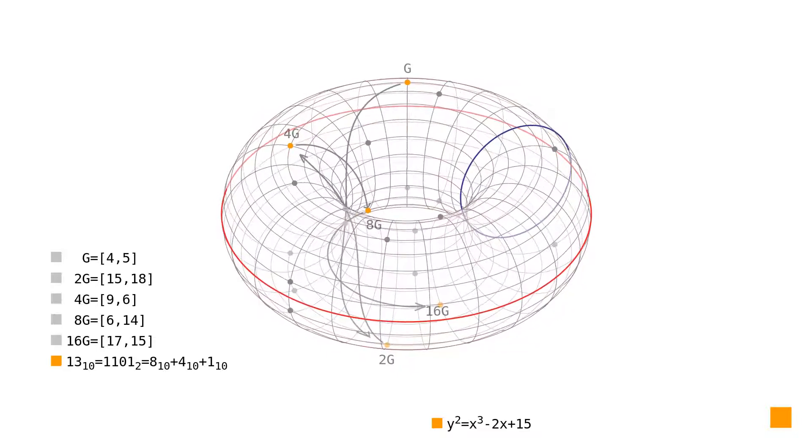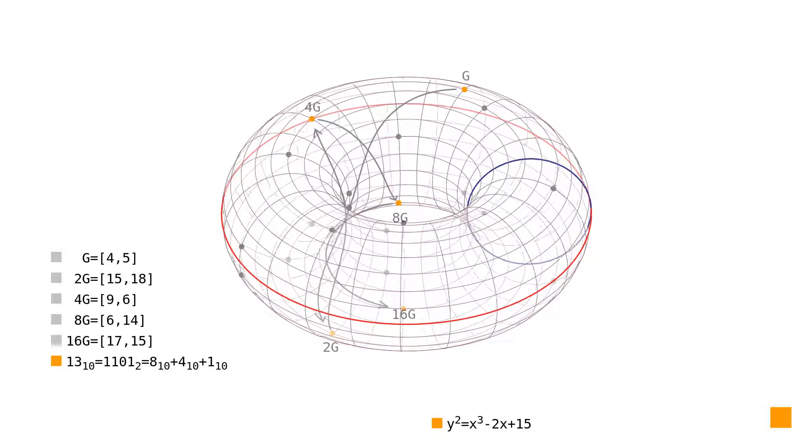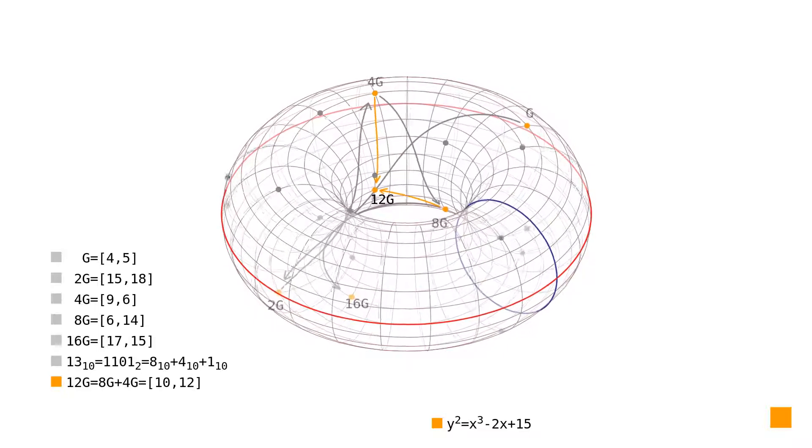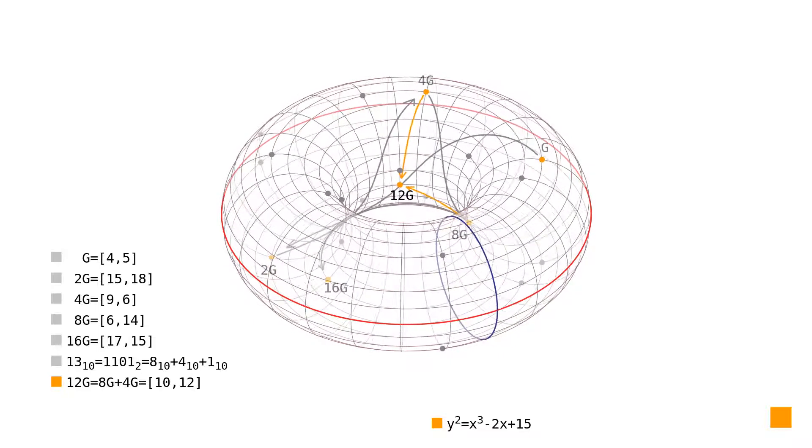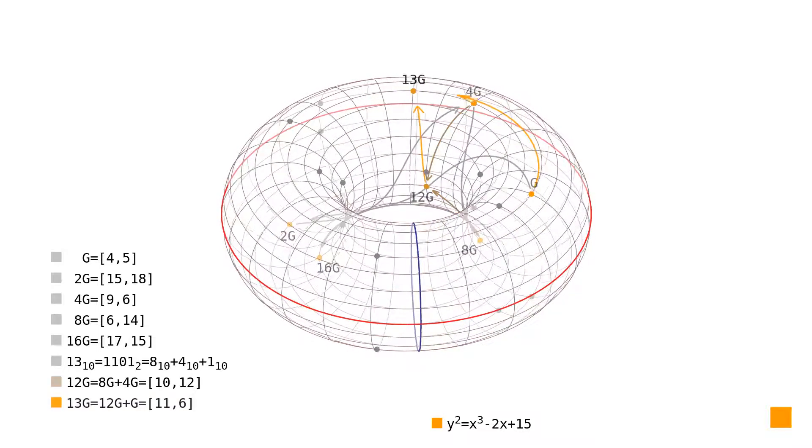Therefore, we sum points 8G and 4G to produce the point 12G. Adding the generator to the point 12G produces the resulting point 13G.